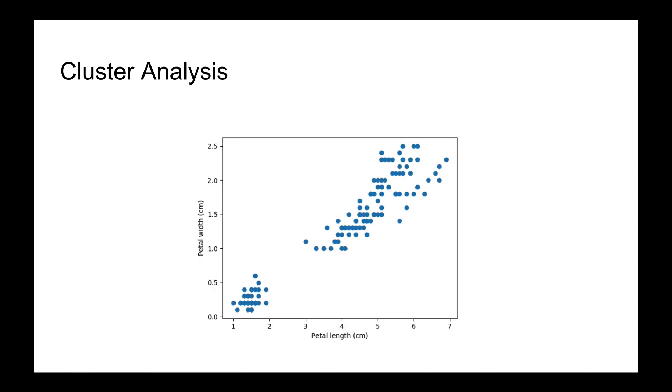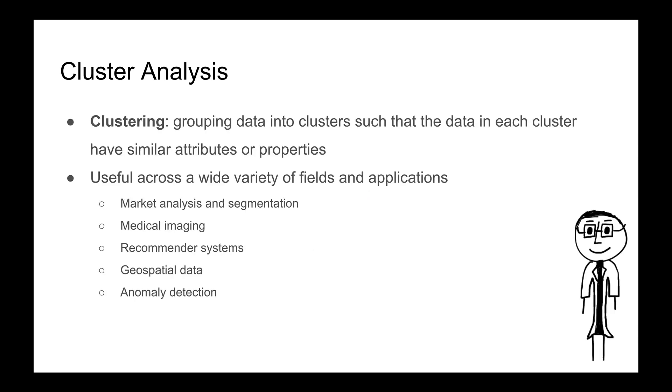So if we go back a slide here, we have one cluster at the bottom left, for example, those are, that might be considered a cluster where the flowers in that cluster have a small petal length and a smaller petal width, for example. That's an example of a grouping is what I'm talking about.